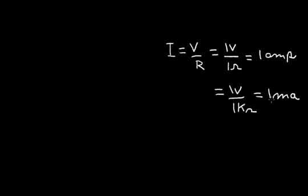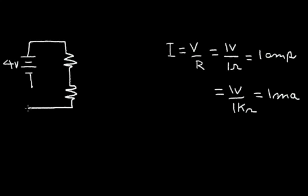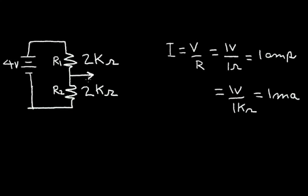A milliamp is a thousandth of an amp, but it is a unit that's much more useful in electronics. So let's now talk about voltage dividers. Let's presume I have a battery — a four volt battery — and I want to divide this voltage into smaller units. I can do that by adding two series resistors. Let's call them R1 and R2. Let's presume that R1 is two k-ohms and R2 is also two thousand ohms. Let's ask ourselves: what is the voltage between the two resistors?